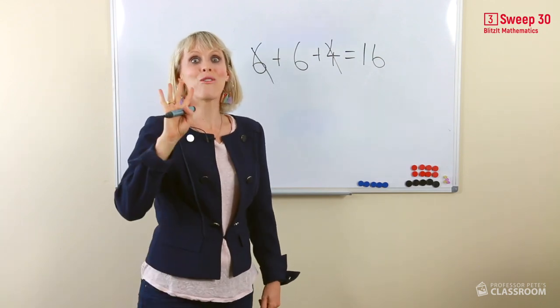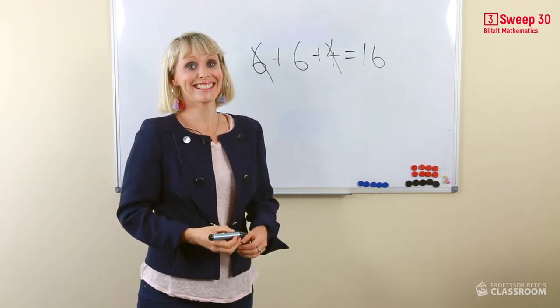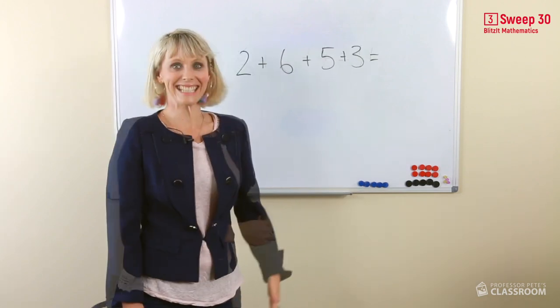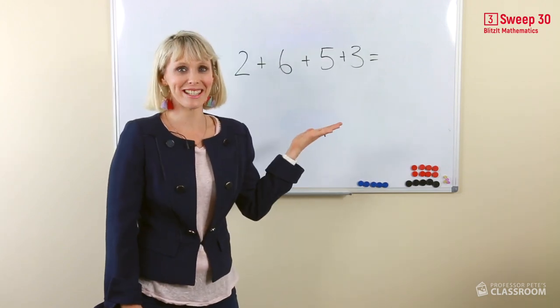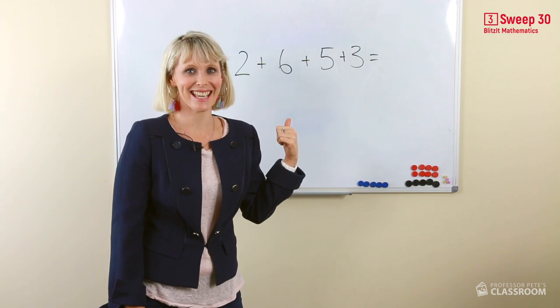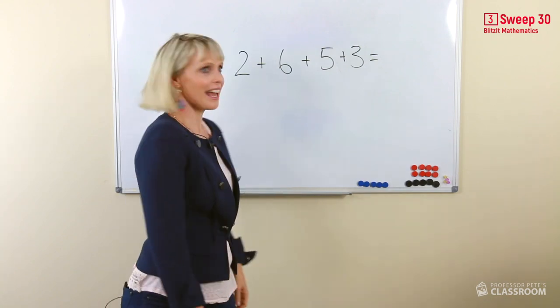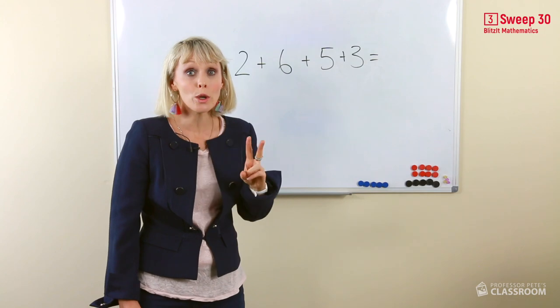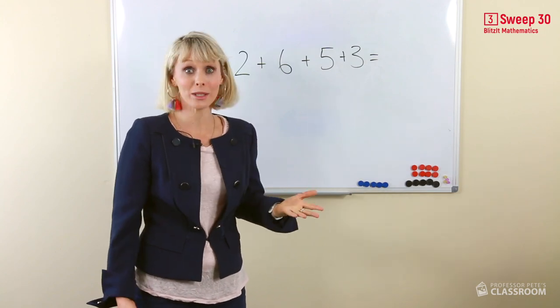Let's see if we can add 4 numbers together. Let's go. Here we go. 4 numbers. Let's have a look at making a 10. Hang on. I don't see any 2 numbers that when they're added together equal 10.